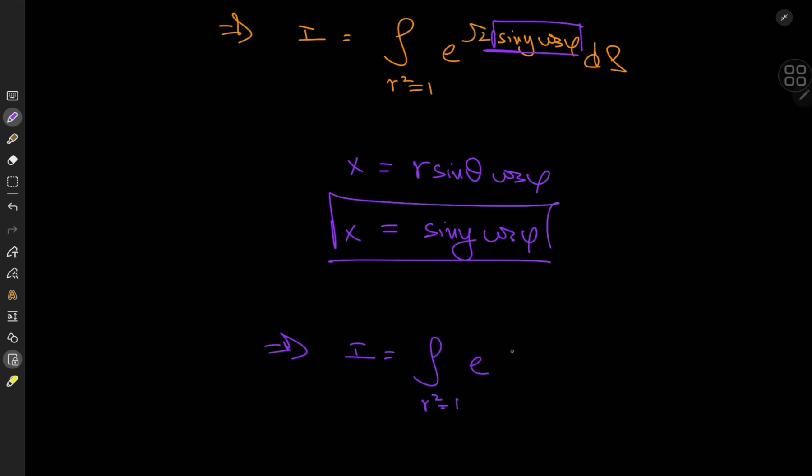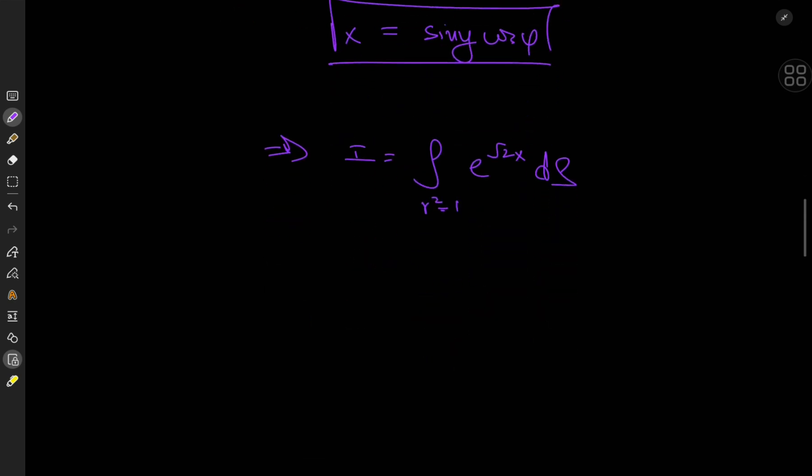which implies that I here is now the integral over r squared equals one, e to the root 2x ds. And what can we do with this integral? Okay, so again, recap, we are integrating this function here over